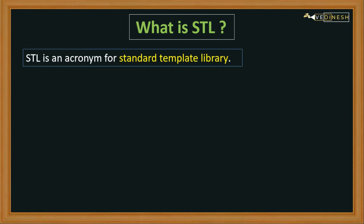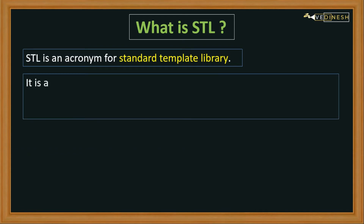STL helps solve this problem like a molding machine. You just put the raw material into the molding machine and it automatically produces the toys. This not only solves the problem of defective toys but also reduces the workforce — you can run your factory with fewer employees, better quality, and more toys. Similarly, STL means you don't need to write everything from scratch, so there are fewer chances of errors in your code. That is why STL is highly used in industry.